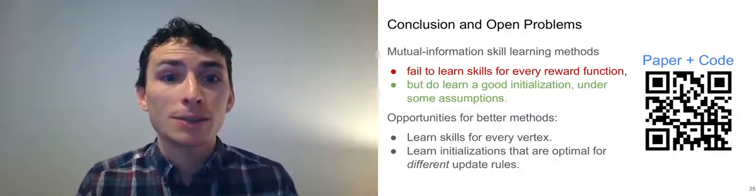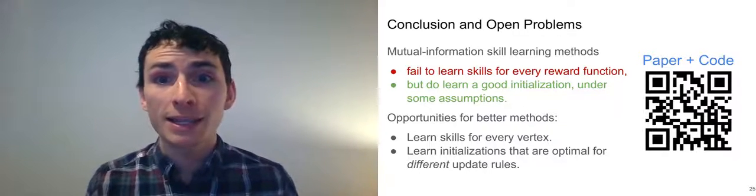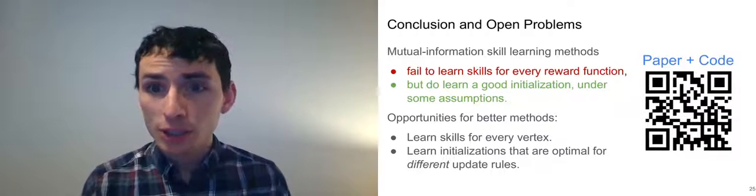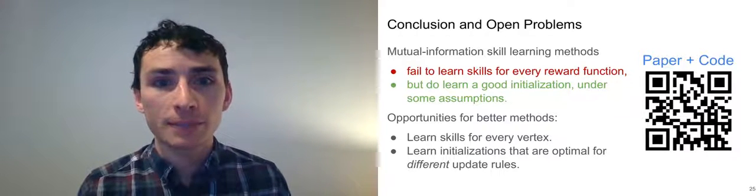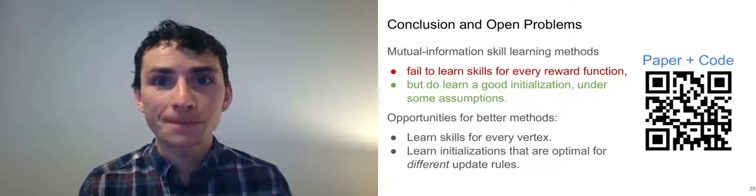The main takeaways from this talk are that unsupervised skill learning algorithms cannot learn the optimal policy of every downstream task, but they do provide an optimal initialization under some strict assumptions. Please check out the poster for more information. I'm happy to take any questions now. Thanks.